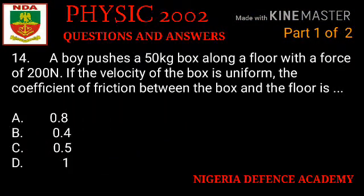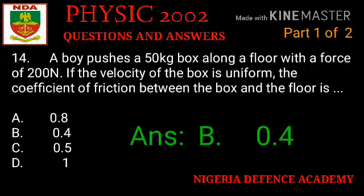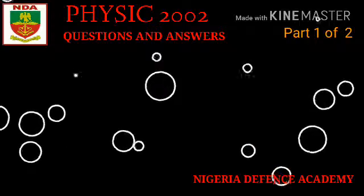Question number fourteen: a boy pushes a 50 kg box along a floor with a force of 200 N. If the velocity of the box is uniform, the coefficient of friction between the box and the floor is what? Option A: 0.8. Option B: 0.4. Option C: 0.5. Option D: 1. The right answer is option B — 0.4.